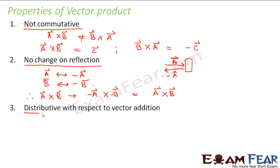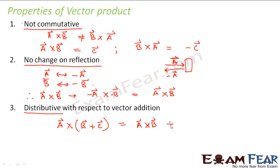The third property is that vector product is distributive with respect to vector addition. That means a cross (b + c) = (a cross b) + (a cross c). This distributive property holds for addition. In the case of subtraction, the negative sign can cause changes in direction, so this property applies specifically to vector addition.